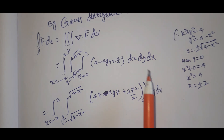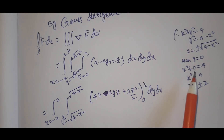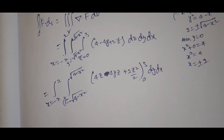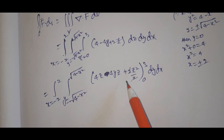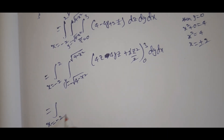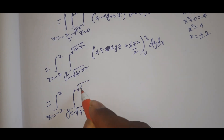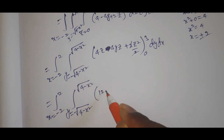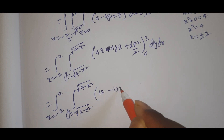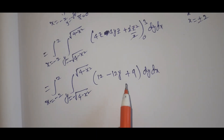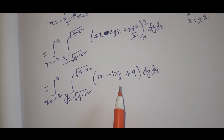Integrating with respect to z, we get [4z − 4yz + 2z²/2] from 0 to 3, which gives 4(3) − 4y(3) + (9) = 12 − 12y + 9. So the integrand becomes 21 − 12y.